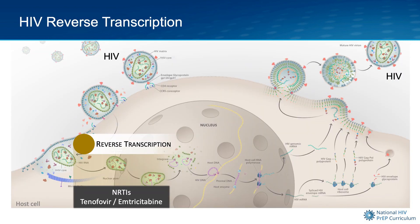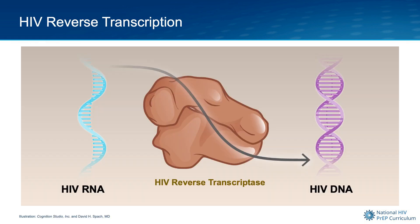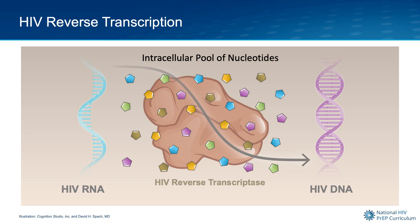To understand how tenofovir and emtricitabine work, it's important to first review the HIV reverse transcription process. The basic concept of HIV reverse transcription is that HIV RNA is converted into HIV DNA. This step depends on the HIV reverse transcriptase enzyme. The building blocks used to generate the HIV DNA are taken from the intracellular pool of nucleotides that are normally present in human cells.